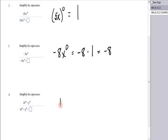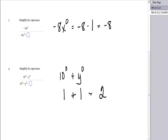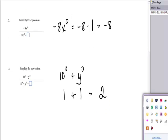This next one, I have 10 to the zero plus y to the zero. Well, 10 to the zero is one. Y to the zero is one. One plus one is two. And that's all the practice we're going to do with exponents of zero.